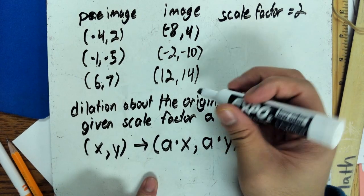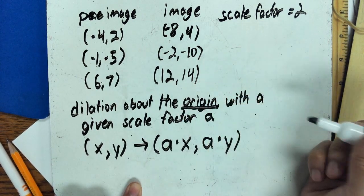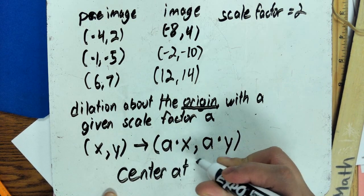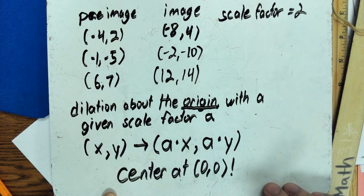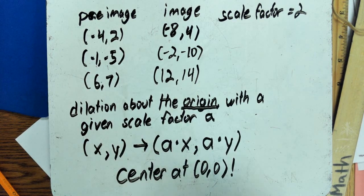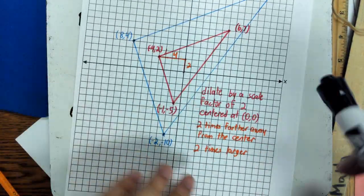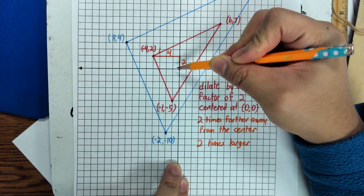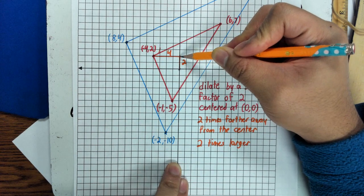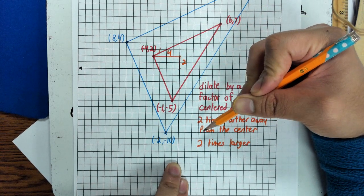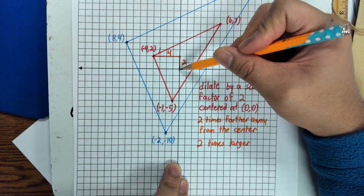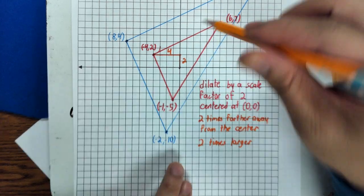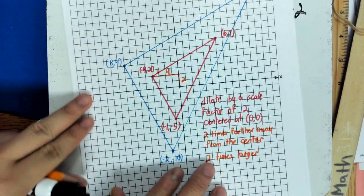This rule only works when your center is at the origin — zero, zero. If your center is not at zero, zero, you have to use the counting method: from the center to the point, measure how far up and over it is, then multiply that distance by the scale factor. For example, up two and over four becomes up four and over eight. That is the method when your center is not at the origin. That's it for dilation.